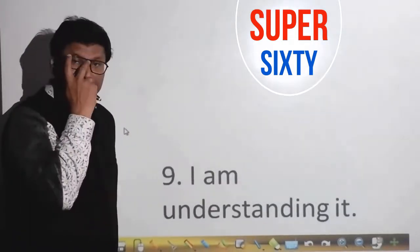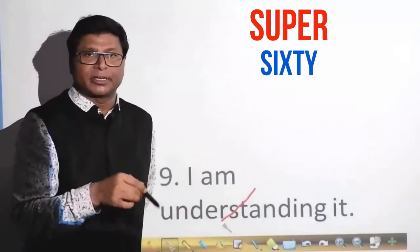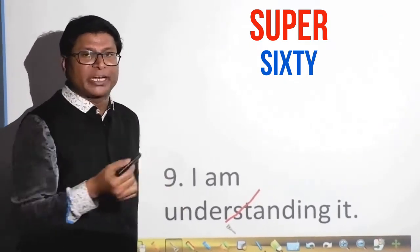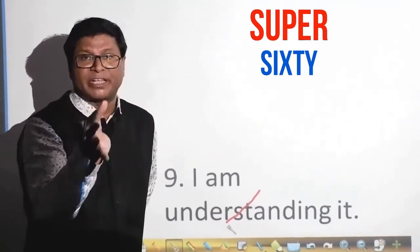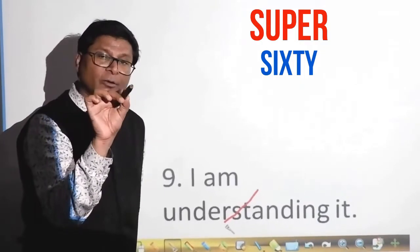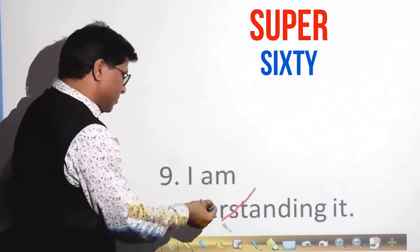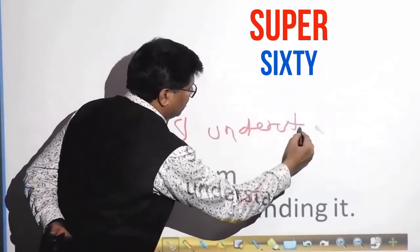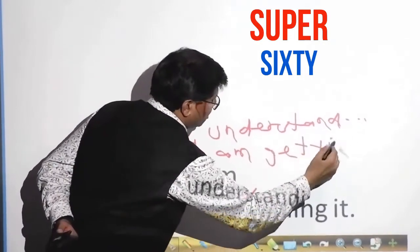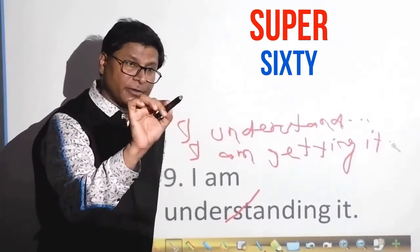The ninth sentence: 'I am understanding it.' You cannot use 'understanding' as a continuous tense verb here. 'Understanding' can be used as a noun — for example, 'There is a good understanding between the two brothers.' If you mean you comprehend something, say 'I understand it.' Alternatively, in informal speech, 'I am getting it' is also acceptable.